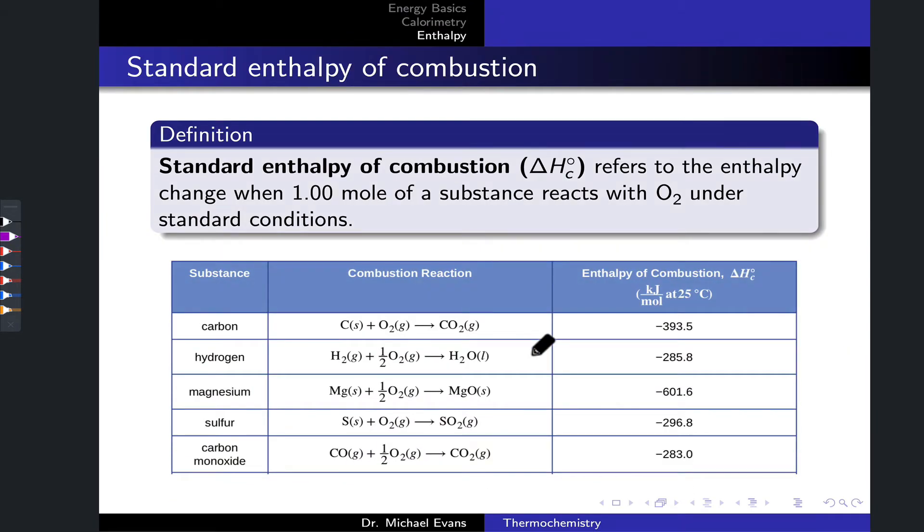One particular type of standard reaction enthalpy is called the standard enthalpy of combustion, written with a subscript C. It still has the little circle indicating that this is a standard enthalpy change from reactants to products in the standard state. What's special about enthalpy of combustion is that it refers to the enthalpy change when one mole of a substance reacts with oxygen under standard conditions. This is a combustion process.